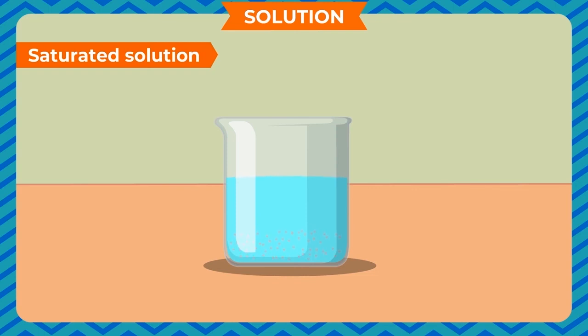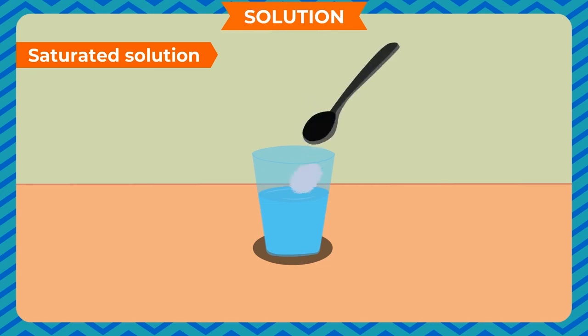Saturated solution. A solution in which no more solute can be dissolved is called a saturated solution. Take some water in a glass. Keep dissolving a teaspoonful of sugar in it.